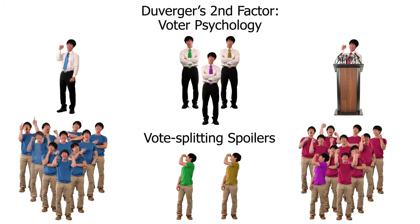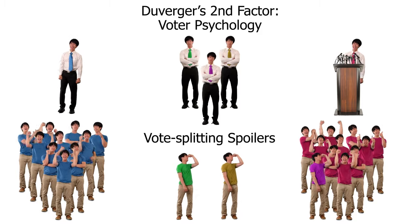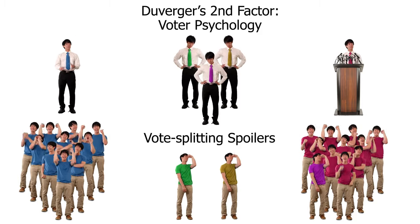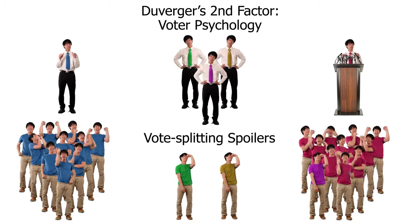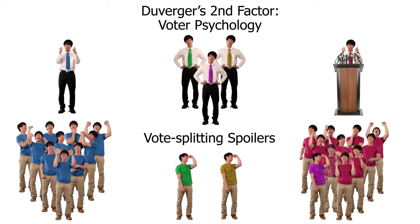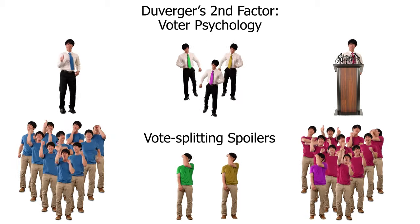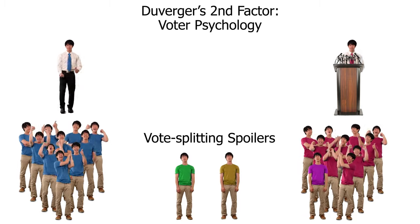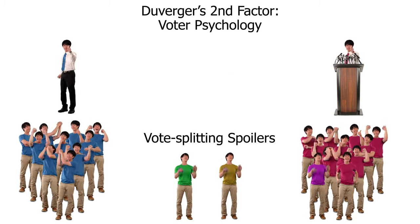All of this has been kind of obvious so far. We can see how plurality voting gives no chance and no representation to third parties. But let's look at some other voting methods.